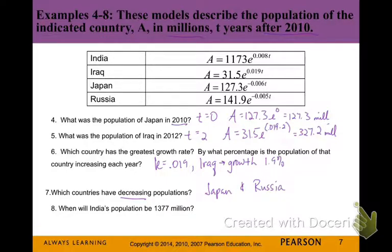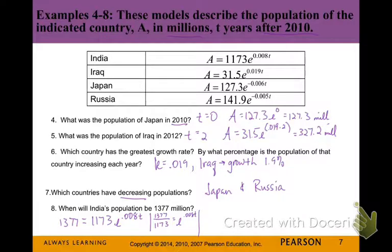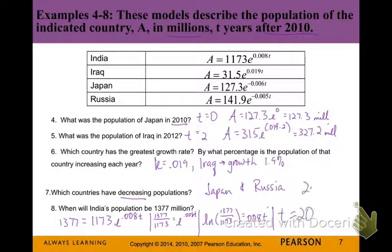When will India's population be 1,377 million? We plug that in as our ending amount and solve for T. First, divide both sides by 1,173 to isolate the exponential expression, then rewrite as a natural logarithm. Leaving the division as a fraction, we then divide by 0.0008, and it comes out to around 20 years after 2010 — so India's population could reach that amount around 2030.